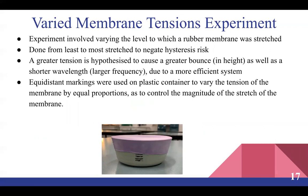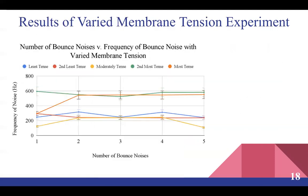The varied membrane tensions experiment involved varying the levels to which a rubber membrane was stretched, done from least to most stretched to negate any hysteresis risk. A greater tension is hypothesized to cause a greater bounce height, as well as a shorter wavelength correlating to a larger frequency, due to a more efficient system. Equidistant markings were used on a plastic container to vary the tension by equal proportions. Results showed that the greater the intensity of the membrane, the greater the frequency noise released at all stages, and the different tensions don't seem to cause any difference in drop-off in frequency, as they become relatively stable in most cases.